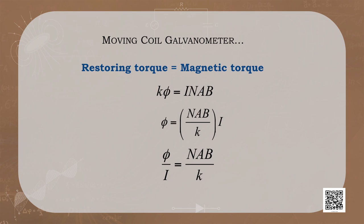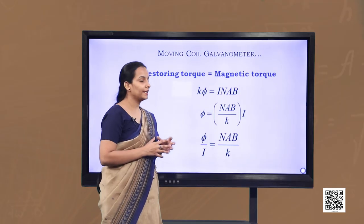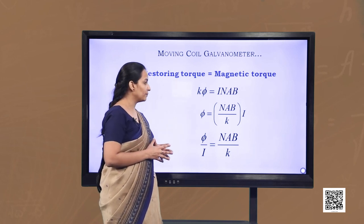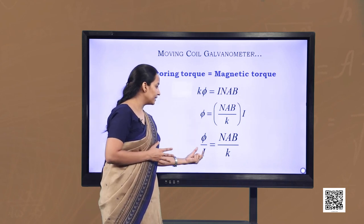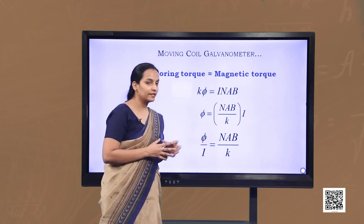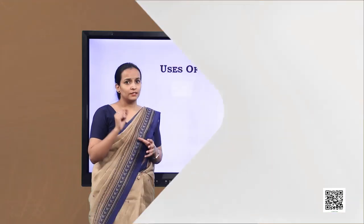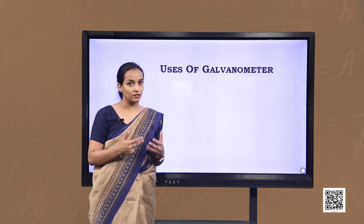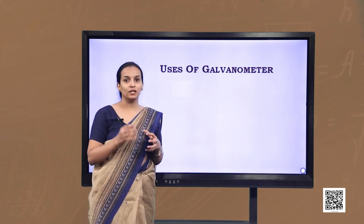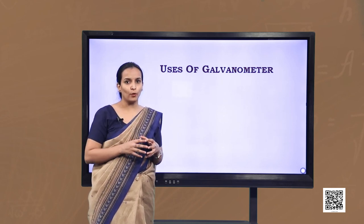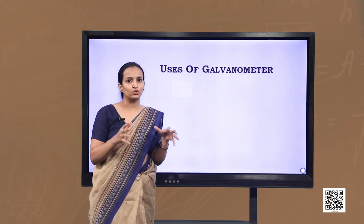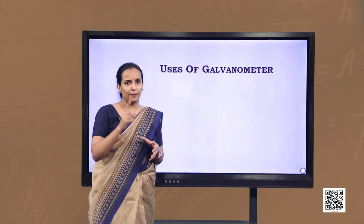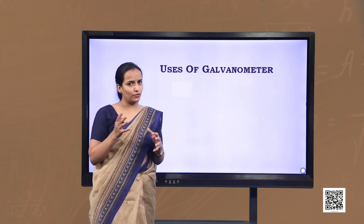The spring provides a counter-torque that balances the magnetic torque, resulting in a steady angular deflection. Mathematically, the restoring torque K·φ (where K is the torsional constant and φ is the angular deflection) equals the magnetic torque N·I·A·B. From this, φ = (NAB/K)·I, and φ/I = NAB/K, which is a constant for a given galvanometer. The galvanometer can be used as a detector to check if current is flowing, or in setups like a Wheatstone bridge where the null point is at the middle of the scale.